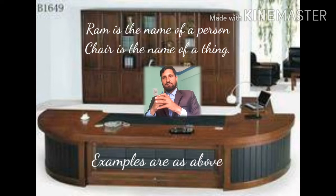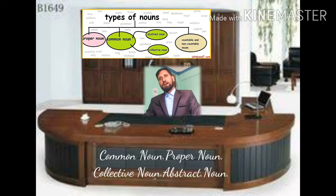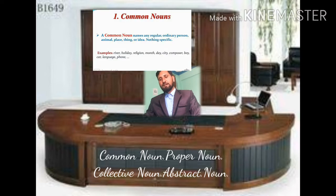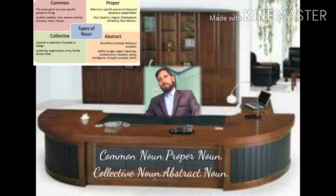Let me discuss the kinds of noun one by one. First of all, we have common noun. Common noun is the name which is given to common people, common places, and common things. For example: girl, child, dog, city, river, etc.